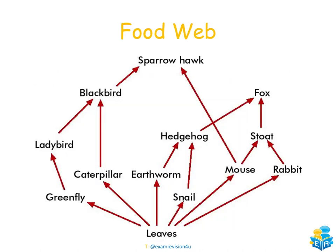Here's another food web example using words. The leaf (primary producer) can be eaten by greenfly → ladybird → blackbird → sparrowhawk; or by earthworm → hedgehog → fox; or by snail → hedgehog → fox. Competition is also visible in food webs: the earthworm, snail, mouse, rabbit, caterpillar, and greenfly all eat leaves. The sparrowhawk and stoat both eat the mouse, putting them in competition for that food source.